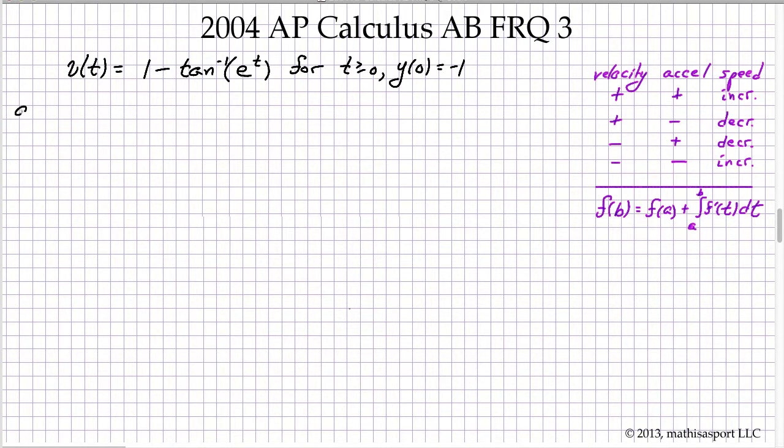The first part asks for acceleration at time t equals 2. Well, acceleration at time t equals 2 is simply asking about the slope of the velocity curve, the slope of the tangent line of the velocity curve at t equals 2.